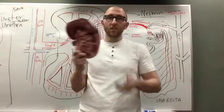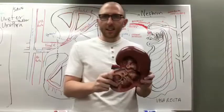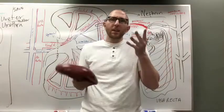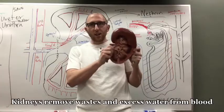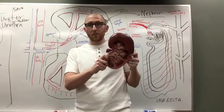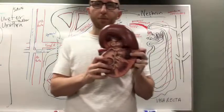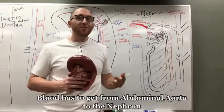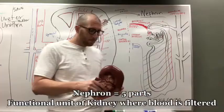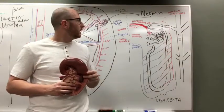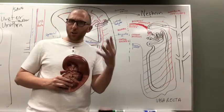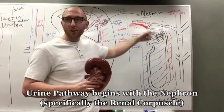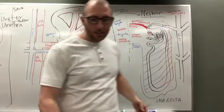The major function of the kidney is to filter water and electrolytes and keep the pH balance in your body normal — it's a giant filter for blood. Blood coming in goes first to something called the nephron. The nephron is a five-part structure that filters the blood and will eventually produce urine, so the urine pathway starts in the nephron.